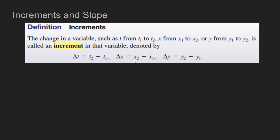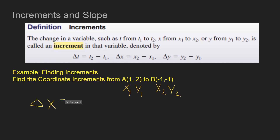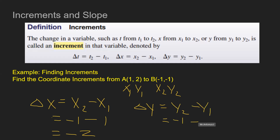Notice that in each case you're taking the difference of the second value minus the first one. So if we want to find the coordinate increments from A (1, 2) to B (−1, −1), I recommend you label them x1, y1 and x2, y2. The increment for x is x2 minus x1, so here that's −1 minus 1, which equals −2. And the increment for y, or delta y, is y2 minus y1, which is −1 minus 2, so the increment there is −3. Pretty straightforward — just a quick example.